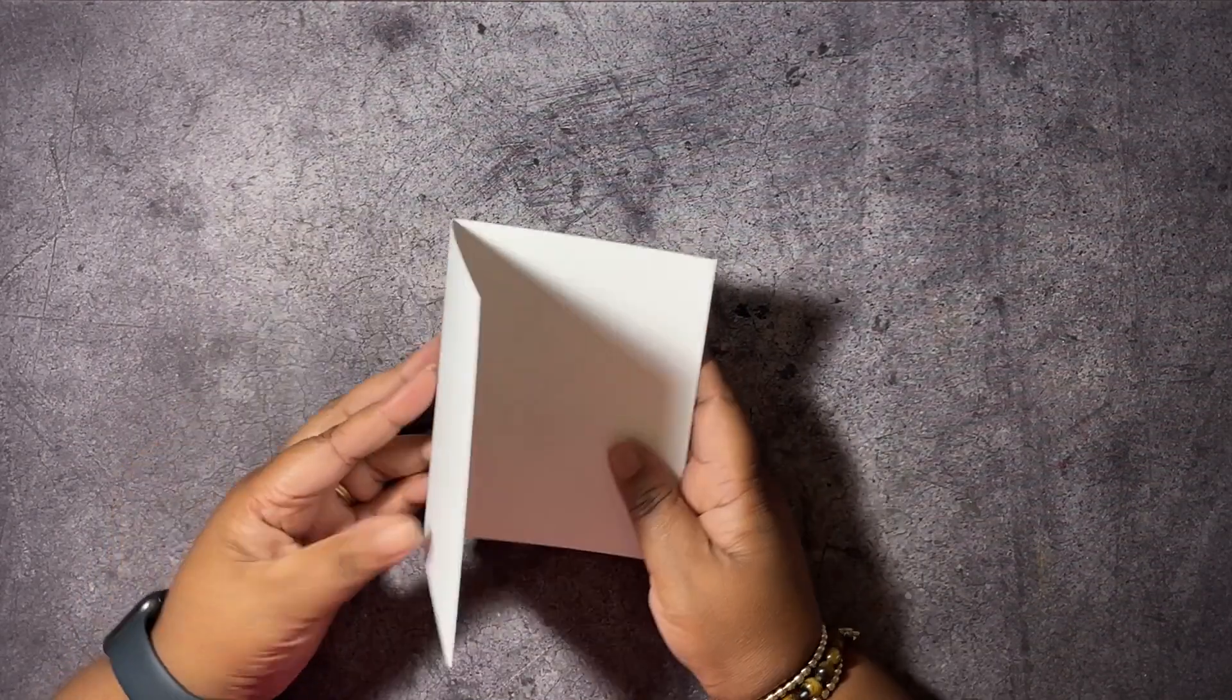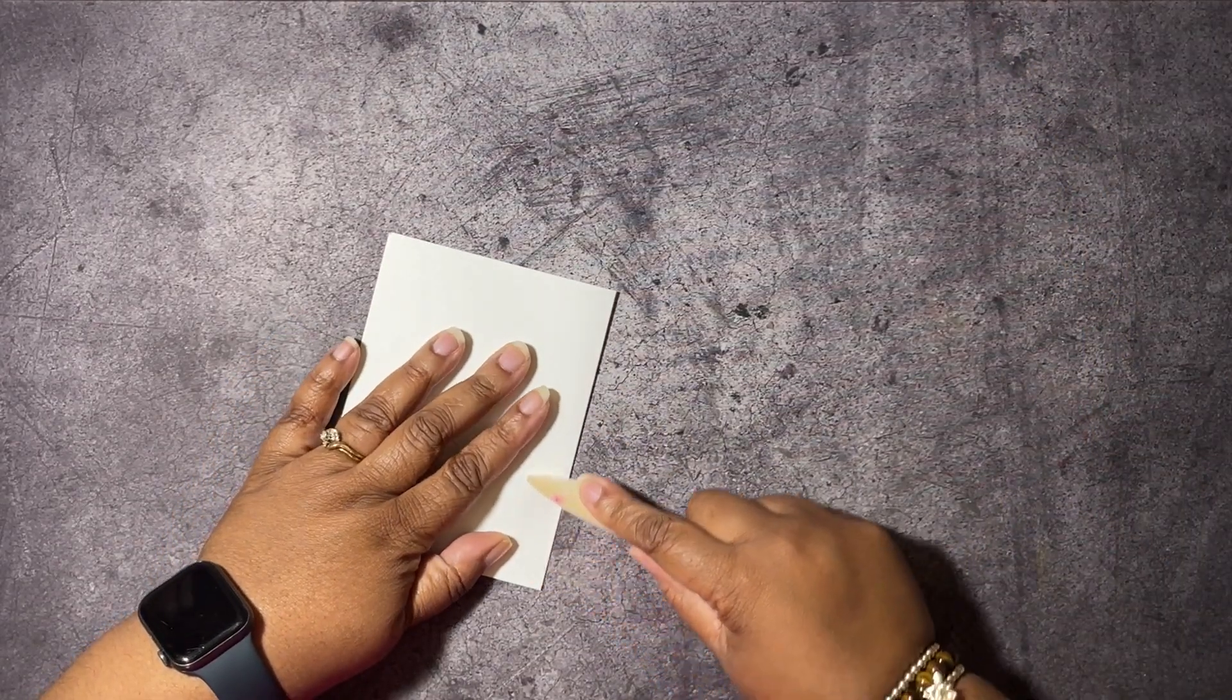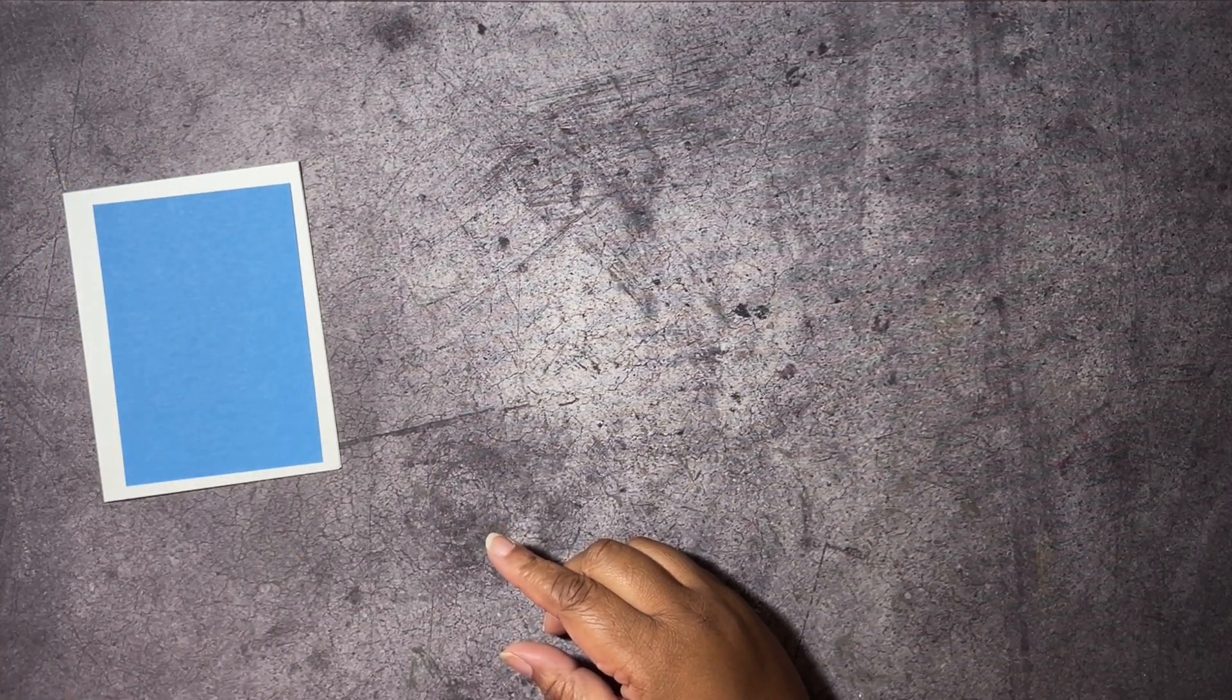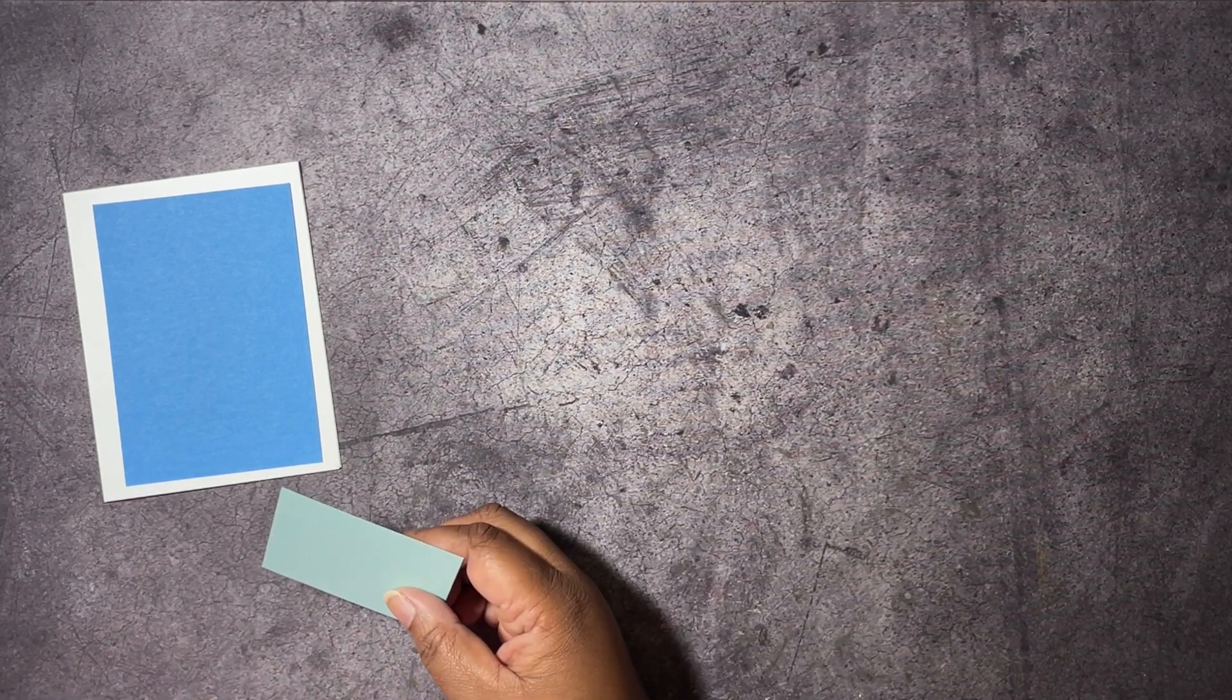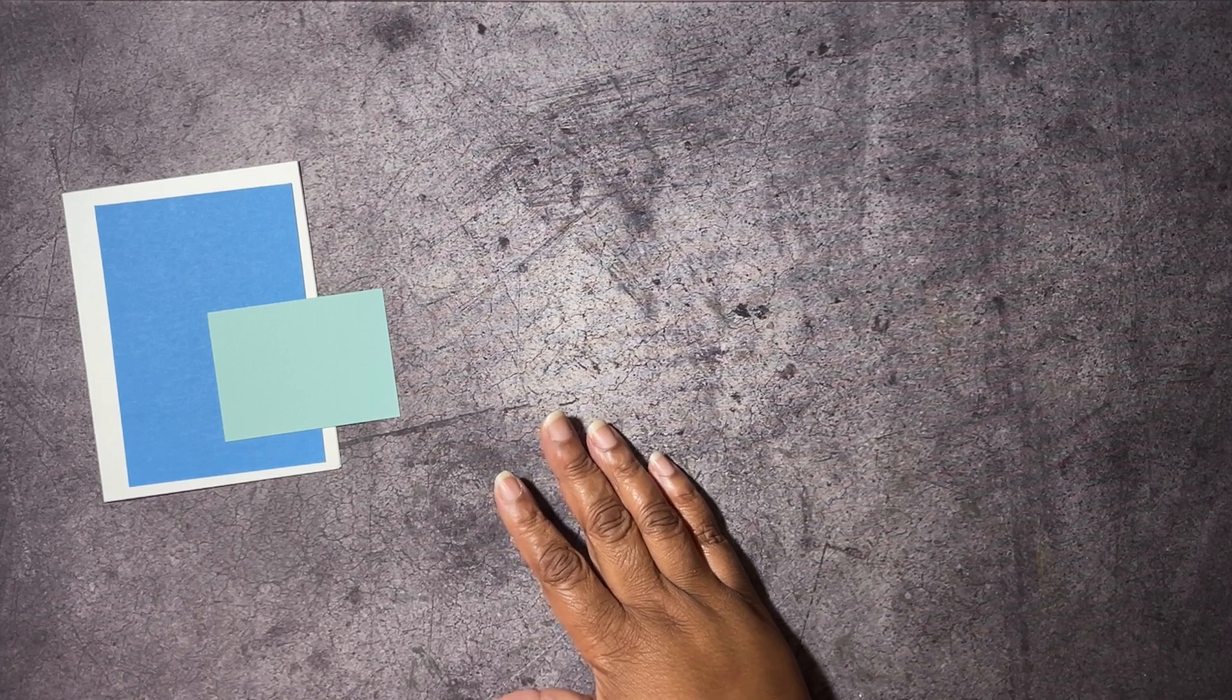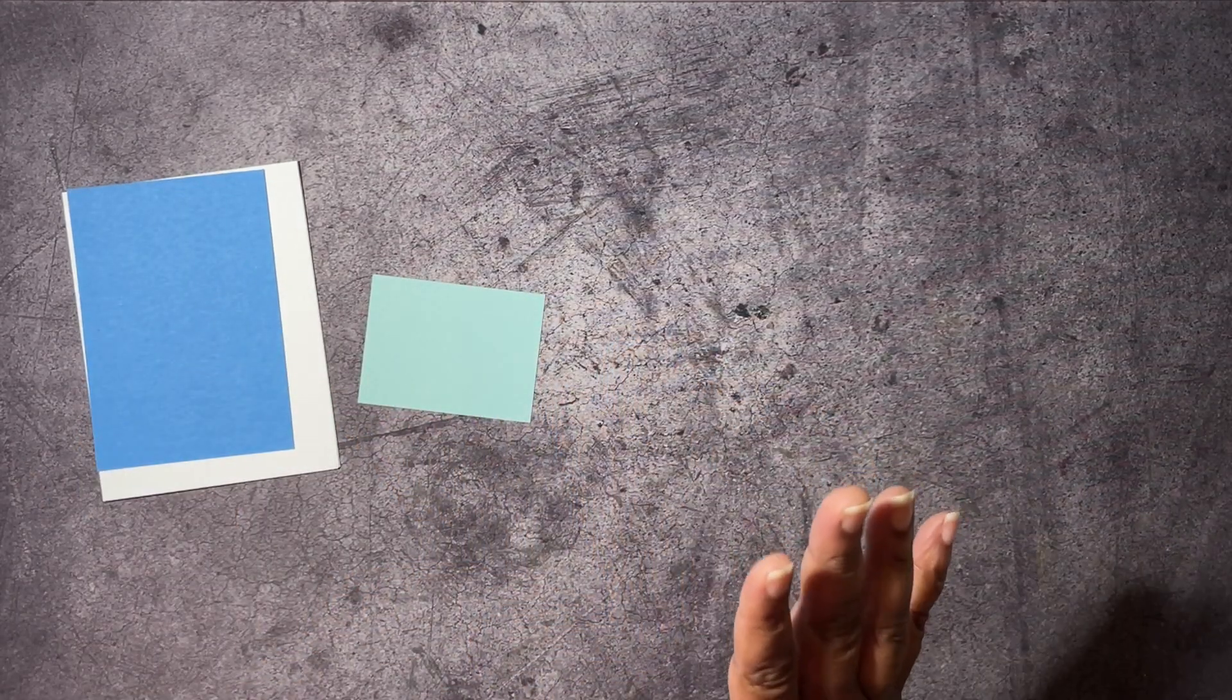So we're going to start with a card base of thick basic white that is eight and a half by five and a half, scored at four and a quarter. And I'm just getting my bone folder so we can burnish this score line. And we're going to have some Azure Afternoon. This is three and a half by five. We have some pool party here, which is three and an eighth by two and five sixteenths. Then we have some scrap white and some lemon lolly. I'm going to show you all that. I want to go ahead and get started because I have some stuff to do.